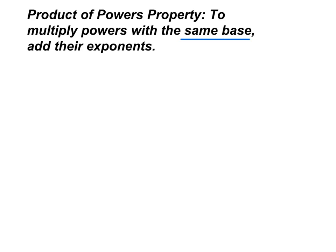This is what it looks like. If you have 7 to the 8th power times 7 to the 9th power, you simply add the exponents, so you would have 7 to the 17th power.